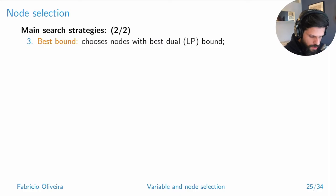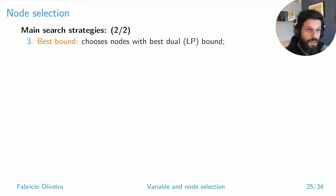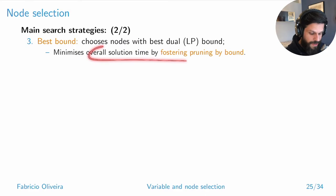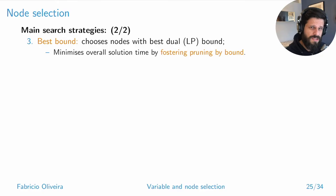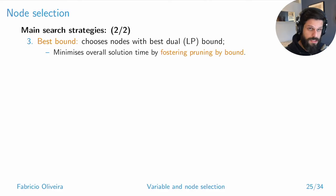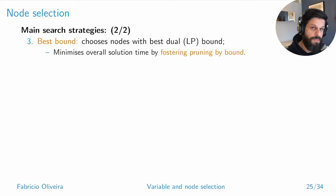Best bound selection means you choose the sub-problem with the best dual bound. The goal is to be able to prune by bound sooner. Concretely, you look at the dual value of the parent node to decide which children to solve first, hoping to lift the bound enough to then prune by bound. The downside is that you may jump around the tree, causing overhead from solving very different sub-problems.